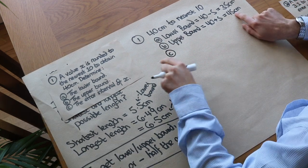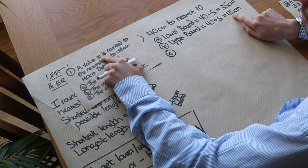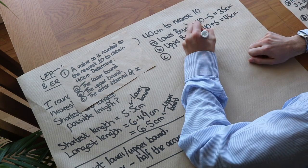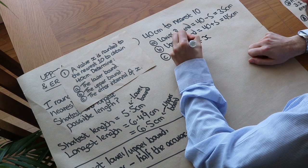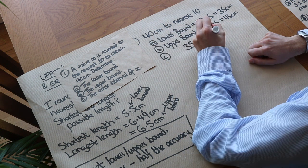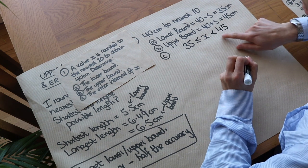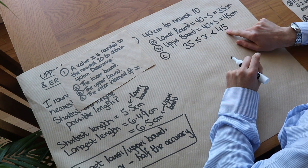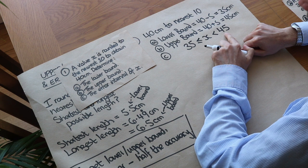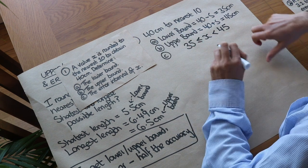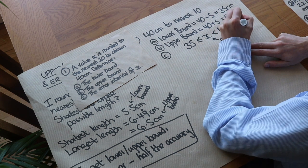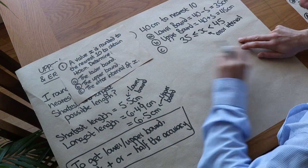The error interval is all the possible values of X. X could have been any value between 35 and 45. X is greater than or equal to 35, since 35 rounds to 40. But X must be less than 45, because 45 to the nearest 10 is 50, not 40. So it's any value up to but not including 45 — for example 44.999, which to the nearest 10 is 40. This is the error interval: the range of all possible values for the original measured value X.